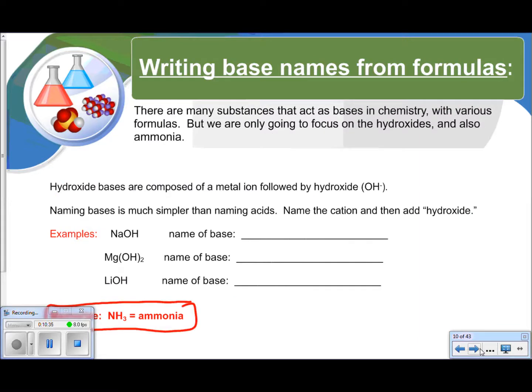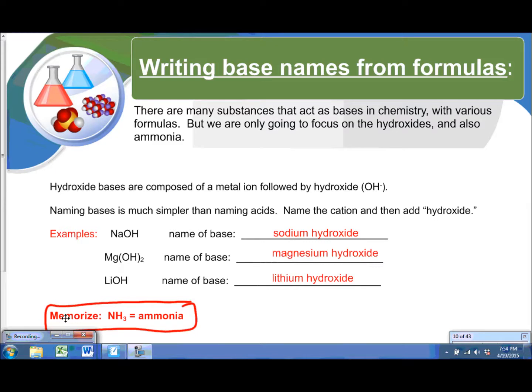Writing base names from formulas. There are many substances that act as bases in chemistry with various formulas, but we're only going to focus on hydroxides and also ammonia. Hydroxide bases are composed of a metal ion followed by hydroxide. So the cation here is sodium, so the name is sodium hydroxide. The cation is magnesium, so our name is magnesium hydroxide. And then lithium, so lithium hydroxide.